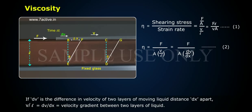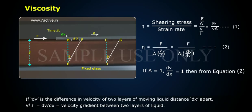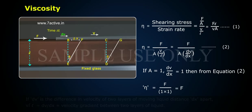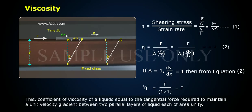If A equals 1 and dv/dx equals 1, then from Equation 2, eta equals F divided by 1 into 1, which equals F. Thus, the coefficient of viscosity of a liquid is equal to the tangential force required to maintain a unit velocity gradient between two parallel layers of liquid, each of area unity.